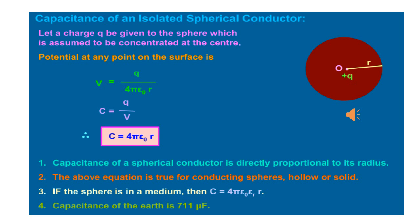we have to consider an isolated spherical conductor. The charge Q is uniformly distributed over its entire surface. It can be assumed to be concentrated at the center of the sphere.